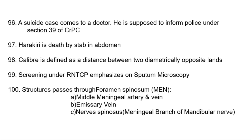Screening under RNTCP emphasizes sputum microscopy. Structures passing through foramen spinosum are the middle meningeal artery and vein, emissary vein, and nervus spinosus, which is a meningeal branch of the mandibular nerve.